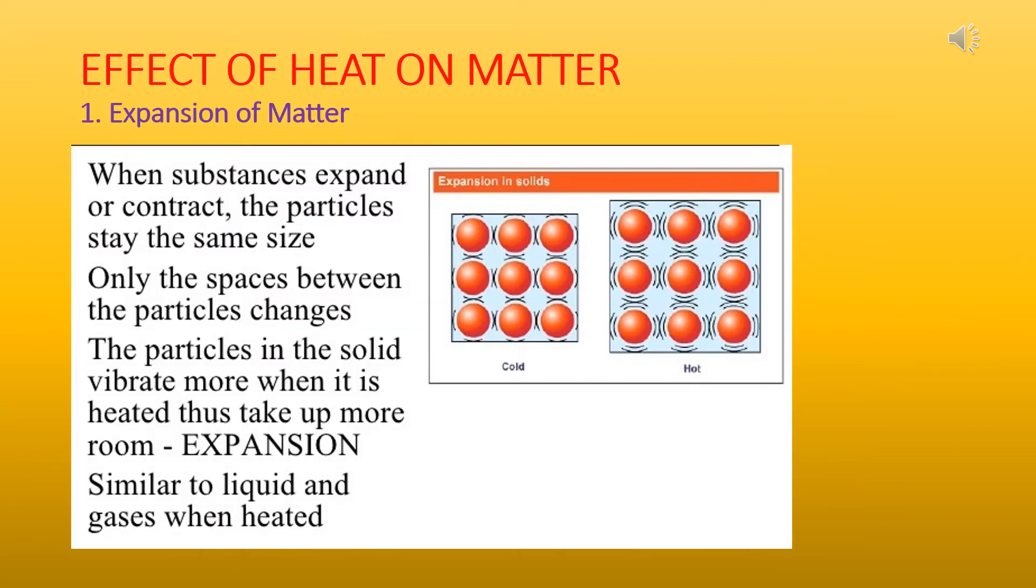The next topic is the effect of heat on matter. So when we heat matter, what changes do we observe? The first change we see is expansion of matter. Why does matter expand? Because when we heat it, the particles of the matter vibrate more. Their vibration increases, and thus they take up more room or more space. This leads to expansion, and this expansion can be seen in all forms of matter: solids, liquids, and gases.